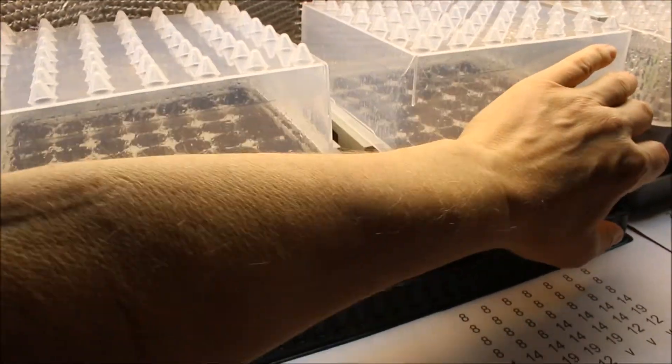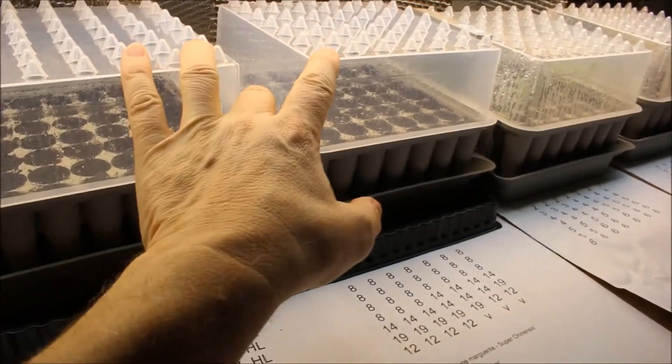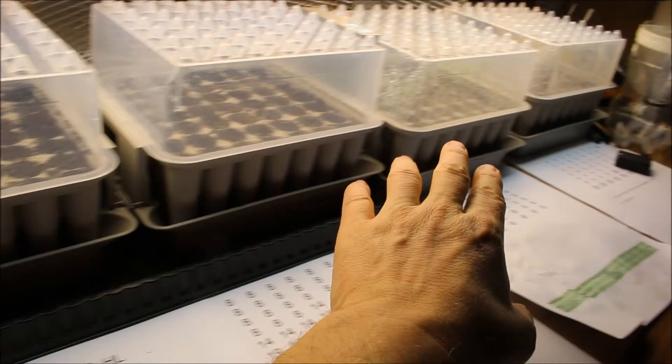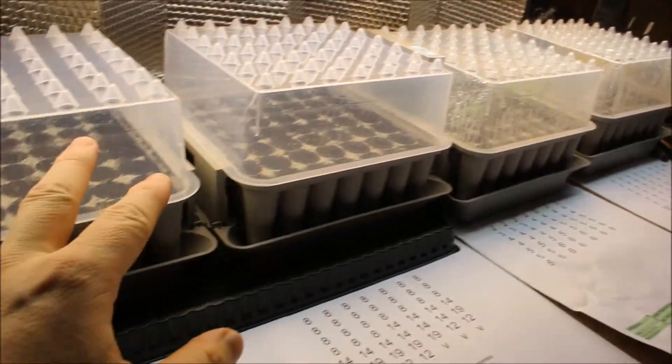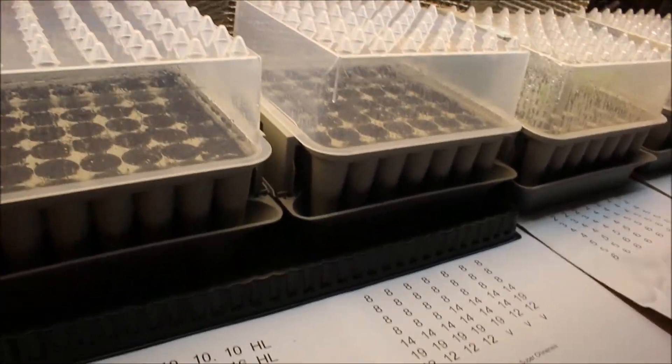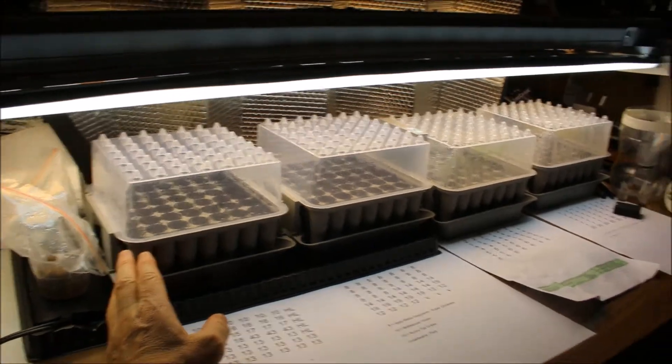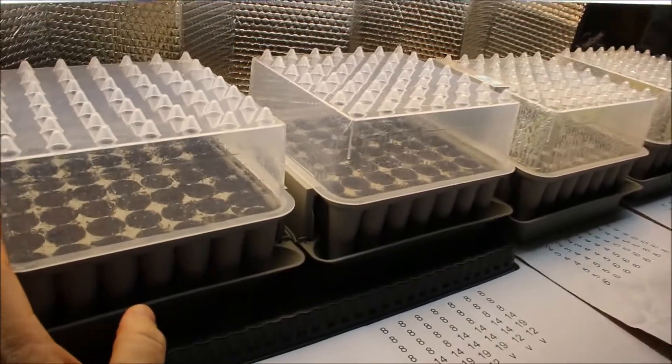Just to give you an idea of the scale—if you see fingertip to elbow, I've got two of these now. That's 98 plants, so I've got almost 200 plants started here in less than one four-foot T5 light.